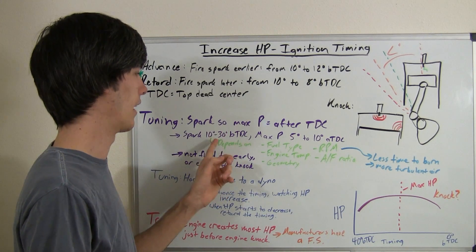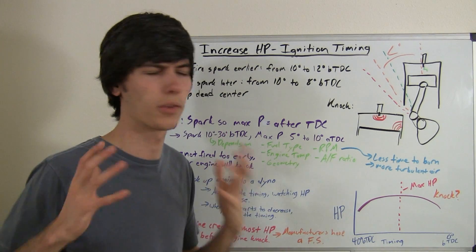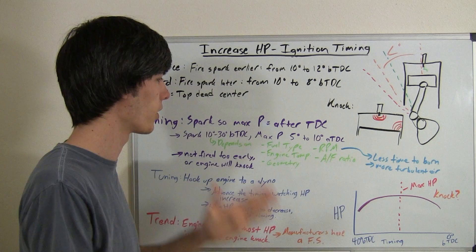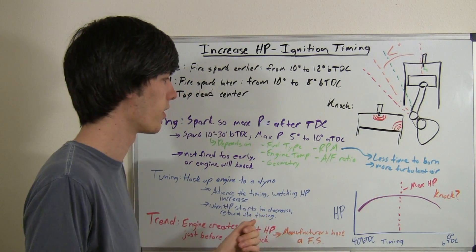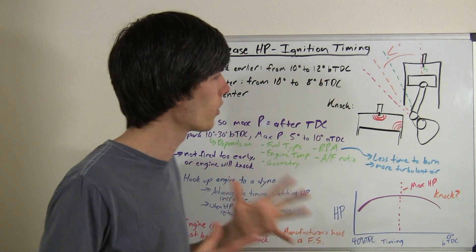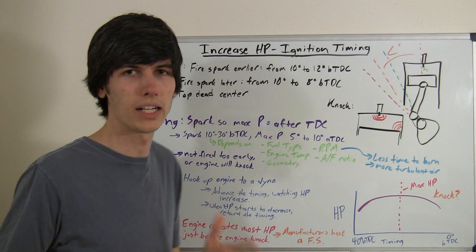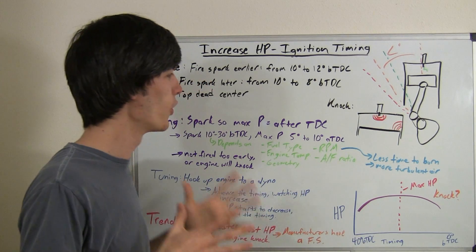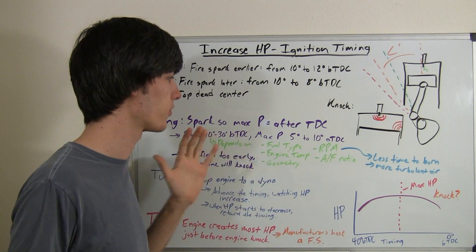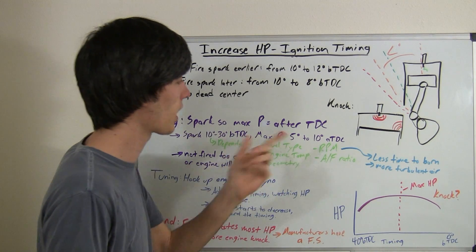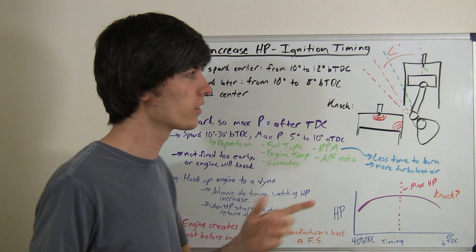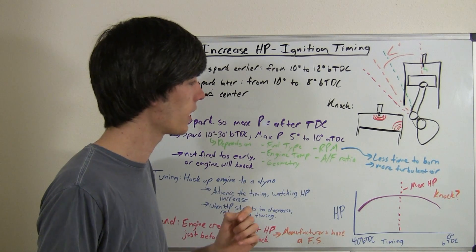Now with this, 10 to 30, you're thinking, okay, that's a pretty big range. What does that depend on? Well, there's a ton of things that depends on, and that's why ignition timing is so crazy to me. It's incredible, and I have a ton of respect for the people out there who understand it, because honestly there's so much that goes into it: the type of fuel you're using, the engine temperature, the geometry of the engine, the RPM.